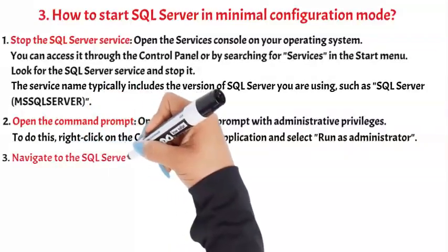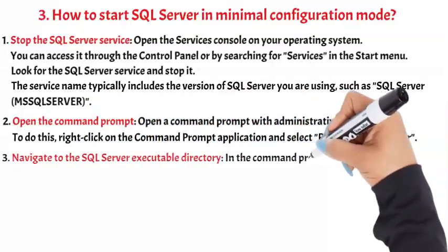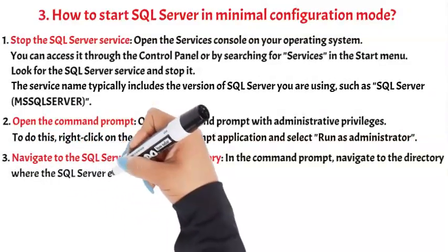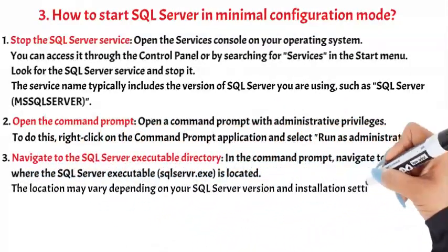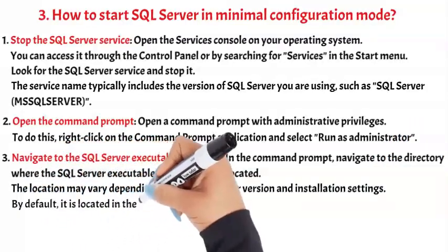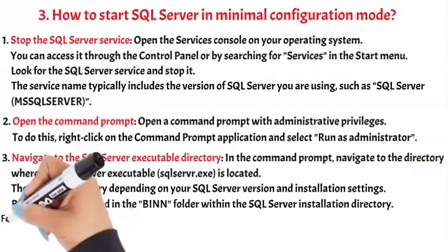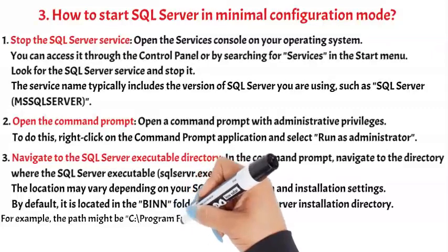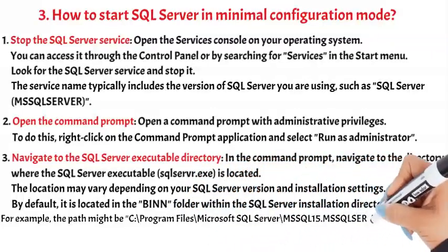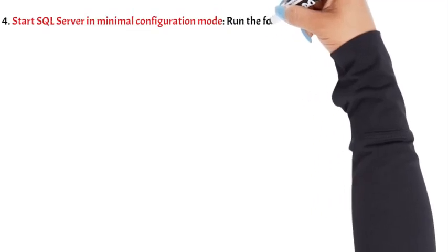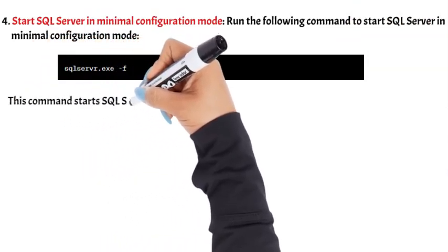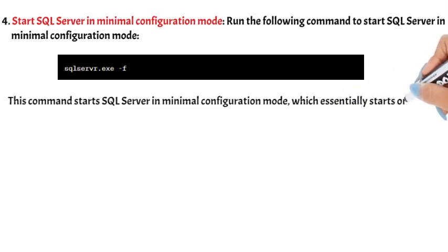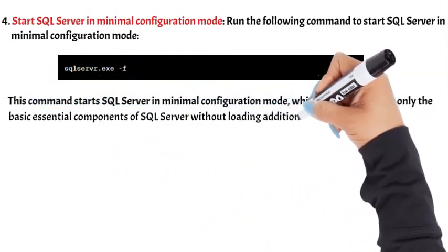Step 3: Navigate to the SQL Server executable directory. In the Command Prompt, navigate to the directory where the SQL Server executable (sqlservr.exe) is located. The location may vary depending on your SQL Server version and installation settings. By default, it is located in the bin folder within the SQL Server installation directory. For example, the path might be C:\Program Files\Microsoft SQL Server\MSSQL15.MSSQLSERVER\MSSQL\Binn. Step 4: Start SQL Server in Minimal Configuration Mode. Run the following command to start SQL Server in Minimal Configuration Mode. This starts only the basic essential components of SQL Server without loading additional features or user databases.